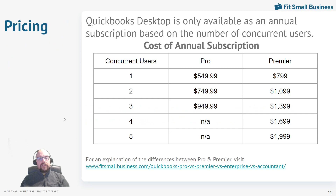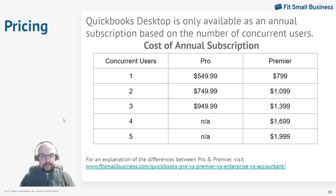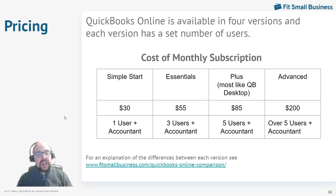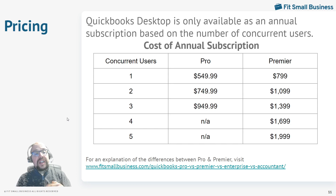Let's look at the pricing structure. QuickBooks Desktop — you pay by the number of users. For Premiere, their most popular desktop edition, it's $799 for one user, then about $300 for each additional user up to five total. So three users is $1,400 a year, two users is $1,100 a year. But remember, with QuickBooks Desktop you get an unlimited number of companies. QuickBooks Online is priced very differently — you get one company for a set number of users.